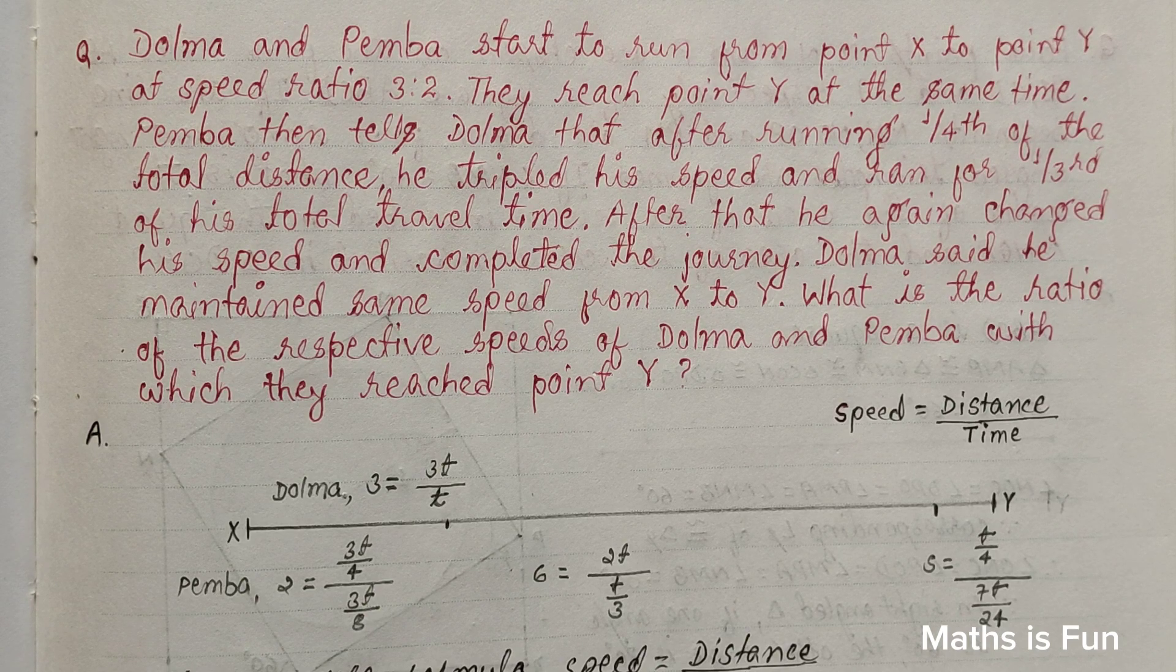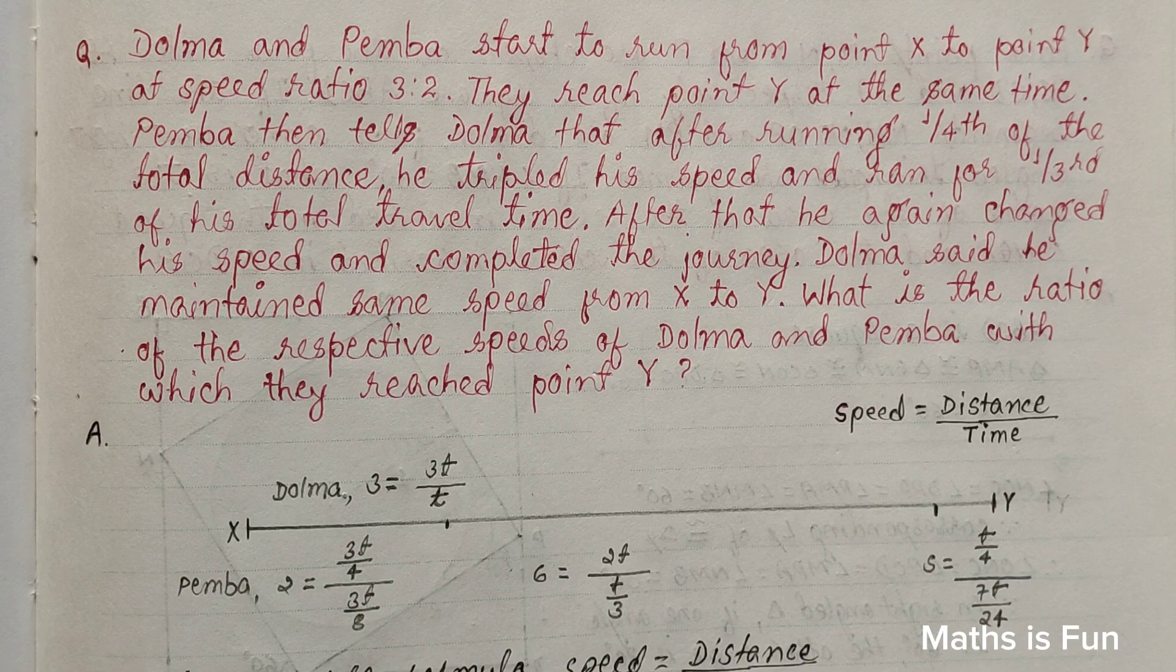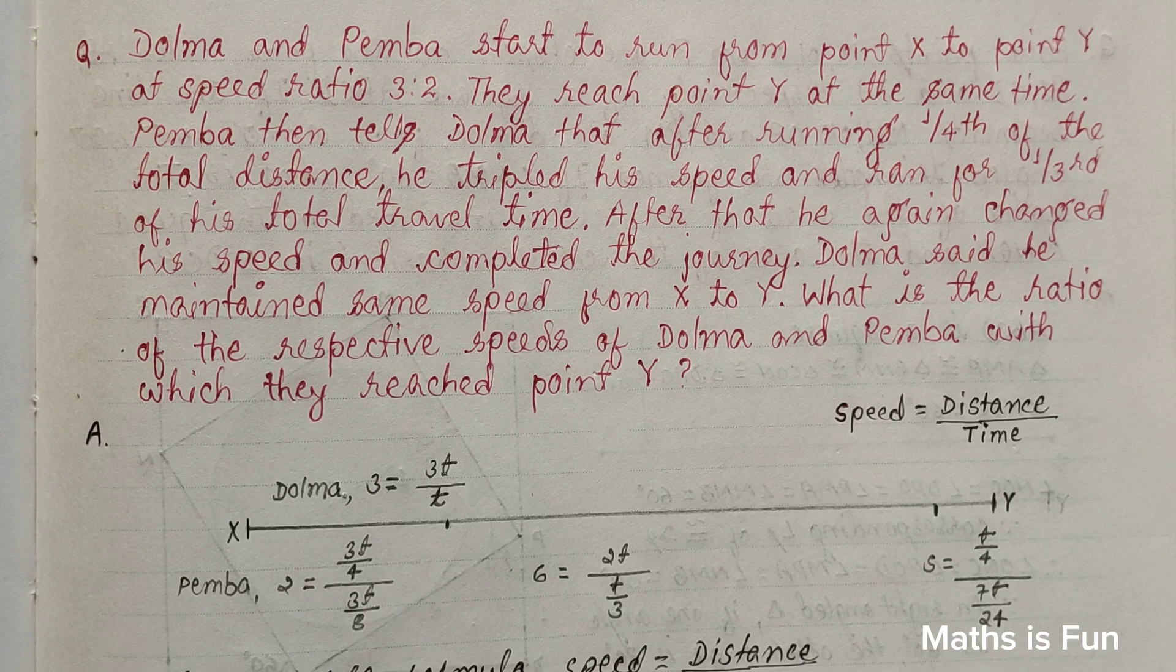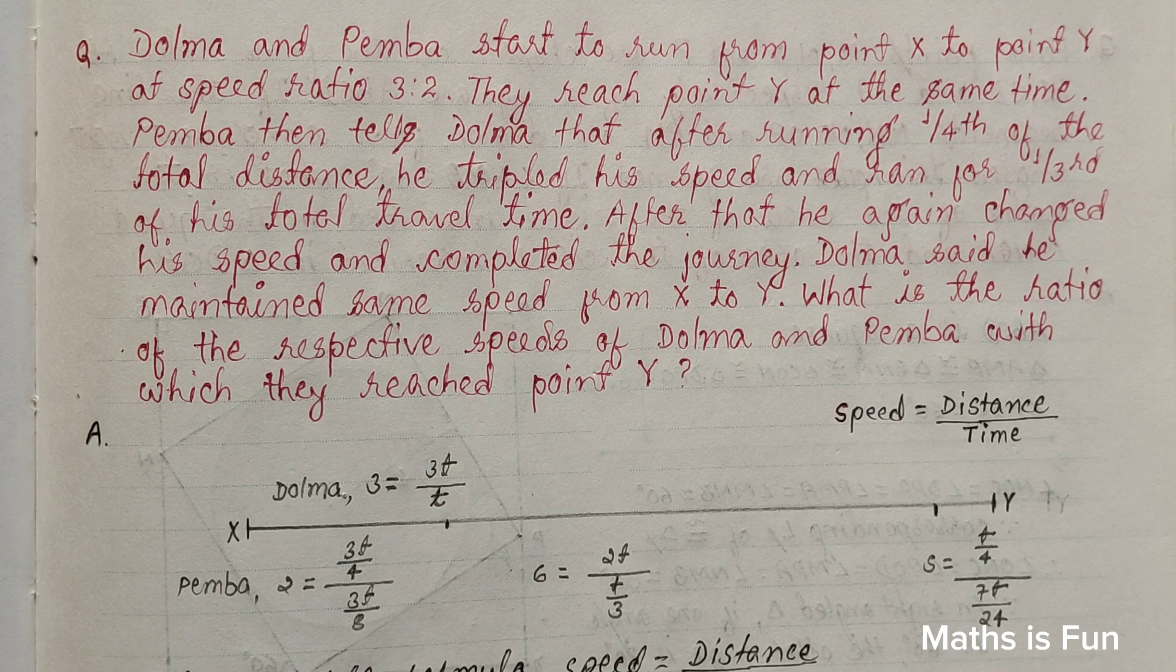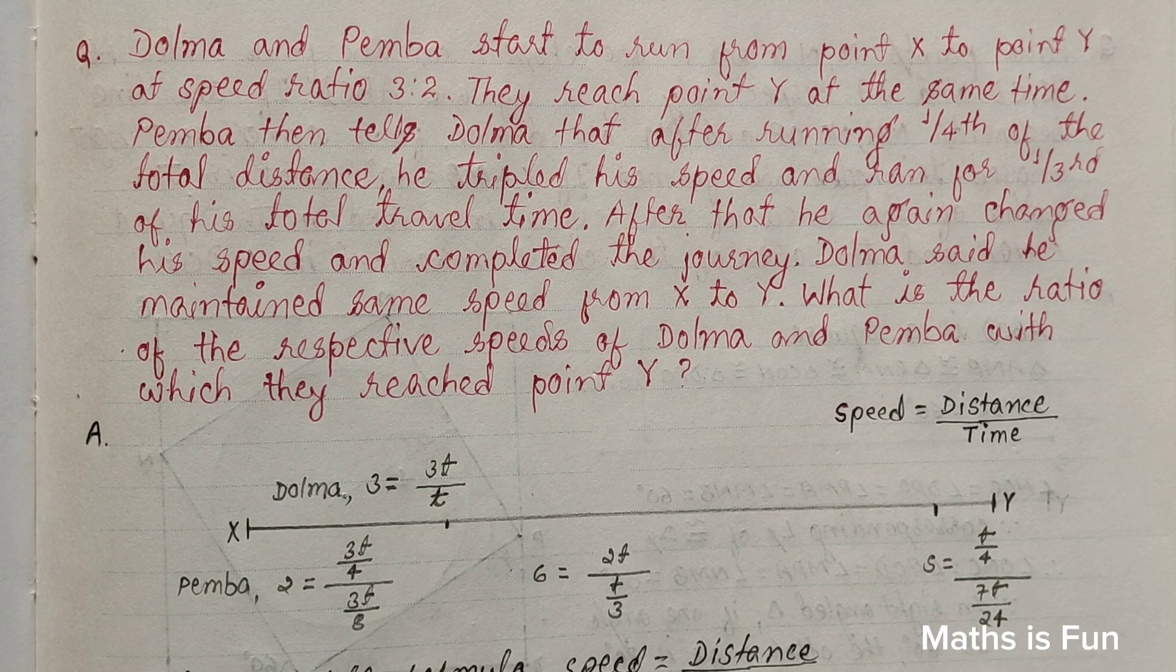Pemba then tells Dolma that after running one fourth of the total distance, he tripled his speed and ran for one third of his total travel time. After that he again changed his speed and completed the journey. Dolma said he maintained same speed from X to Y. What is the ratio of the respective speeds of Dolma and Pemba with which they reach point Y?